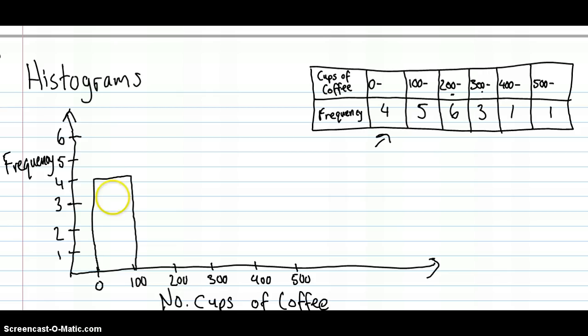So the first group had a frequency of 4. In the second group, which was from 100 to 200, there was a frequency of 5. 5 people responded that they'd had between 100 and 200 cups of coffee in that year. The next group, 200 to 300, was 6. So this is our biggest group. There's that one. And the next two were only 1. So 1 and 1. Okay, so that's pretty much our histogram there.